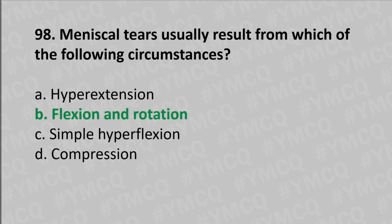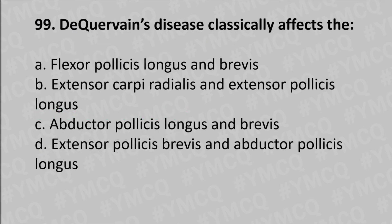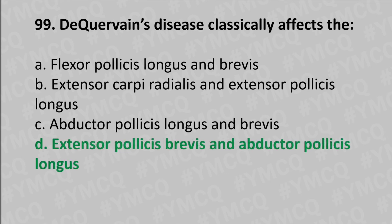Moving to our 99th question: De Quervain's disease classically affects option A flexor pollicis longus and pronator, option B extensor carpi radialis and extensor pollicis longus, option C abductor pollicis longus and pronator, option D extensor pollicis brevis and abductor pollicis longus. The answer is option D, extensor pollicis brevis and abductor pollicis longus.